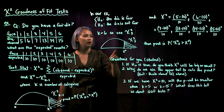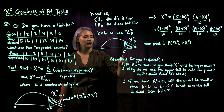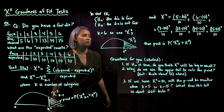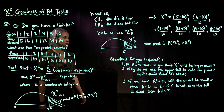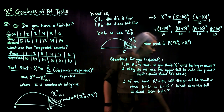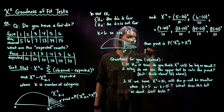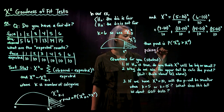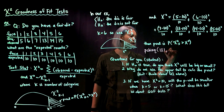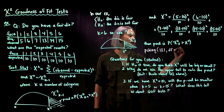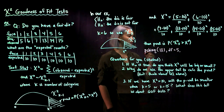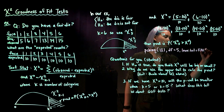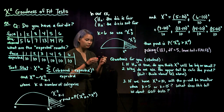Once we have the test statistic, we sketch the chi-squared distribution with five degrees of freedom, draw in our test statistic, and shade the right tail. The p-value is the probability that a chi-squared distribution with five degrees of freedom is greater than our test stat. In R, we use the pchisq command — for example, pchisq(13.1, 5, lower.tail = FALSE) — which gives us the p-value.